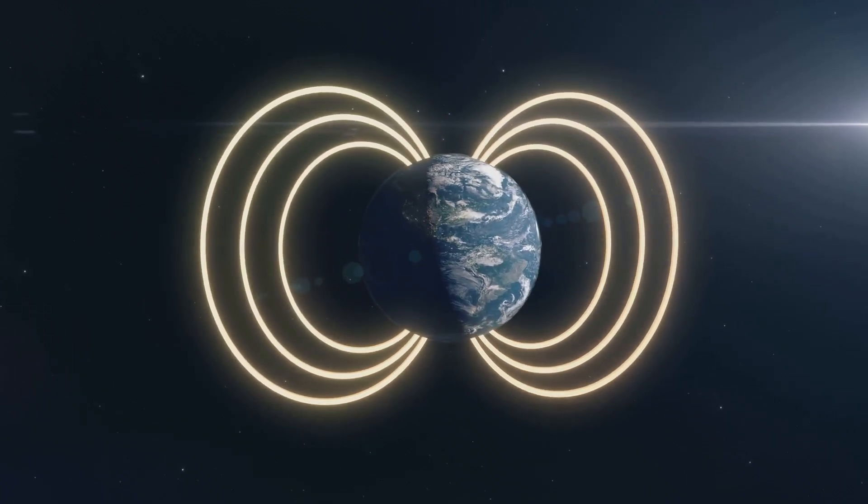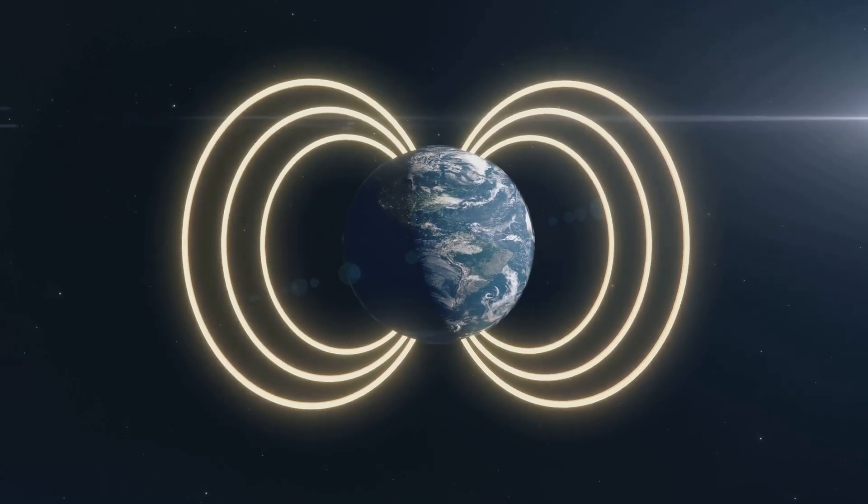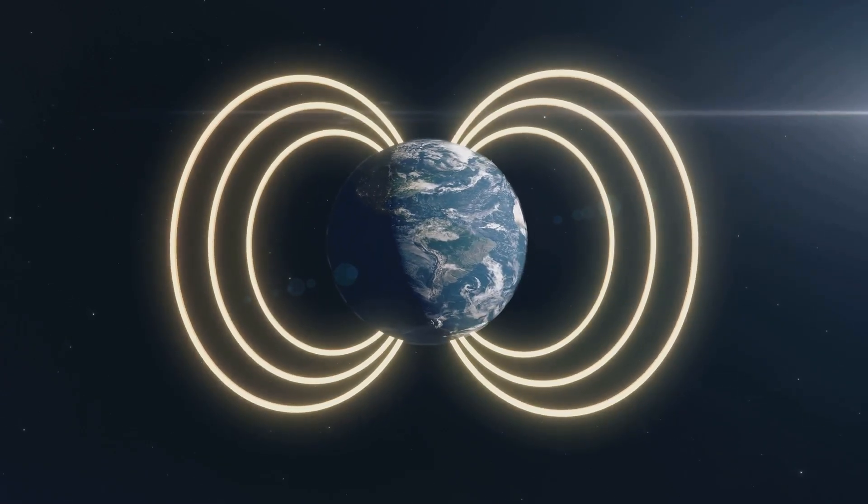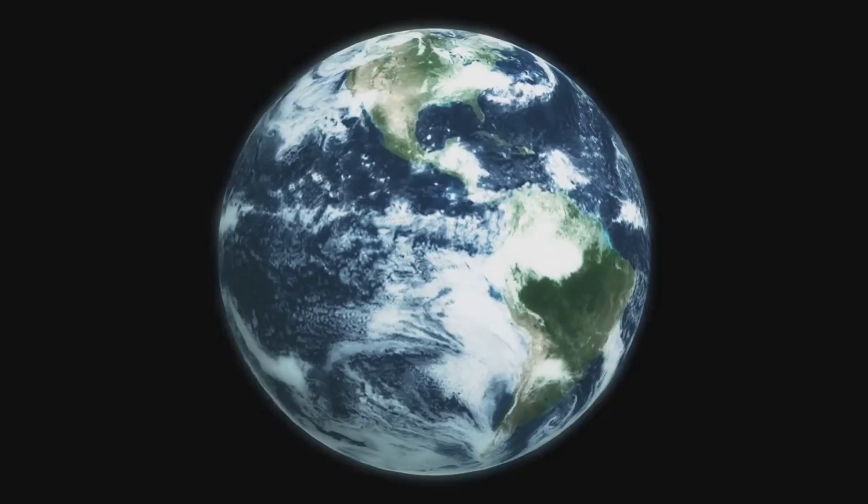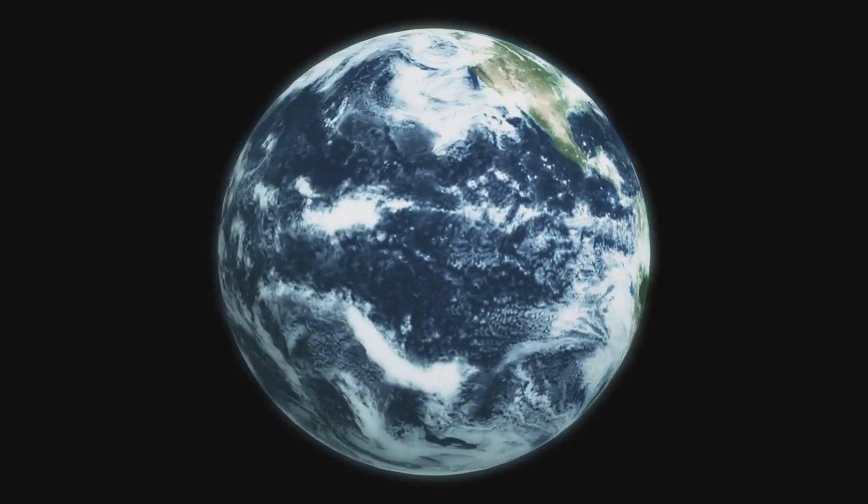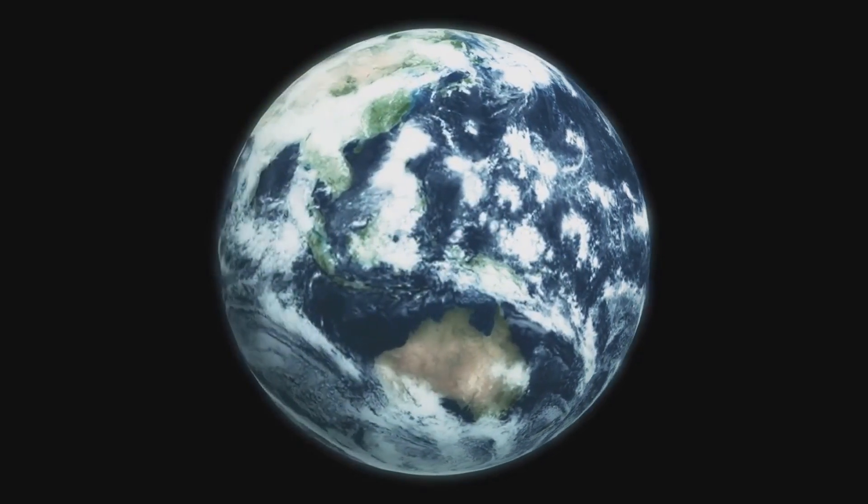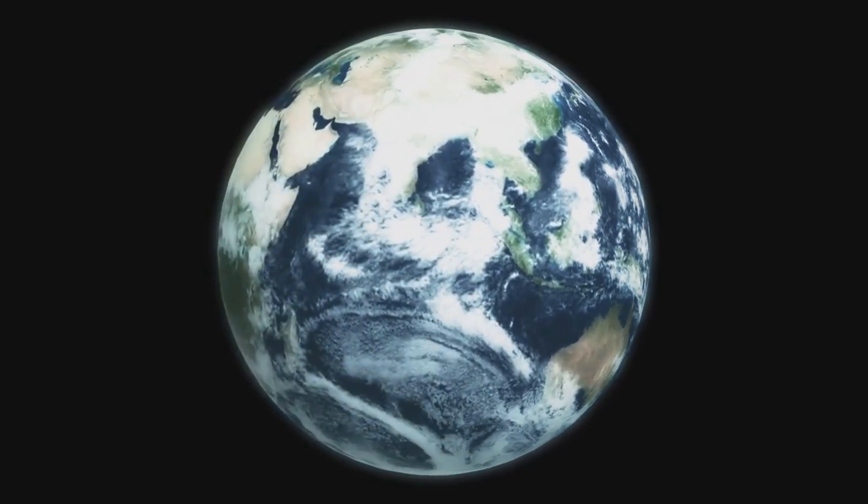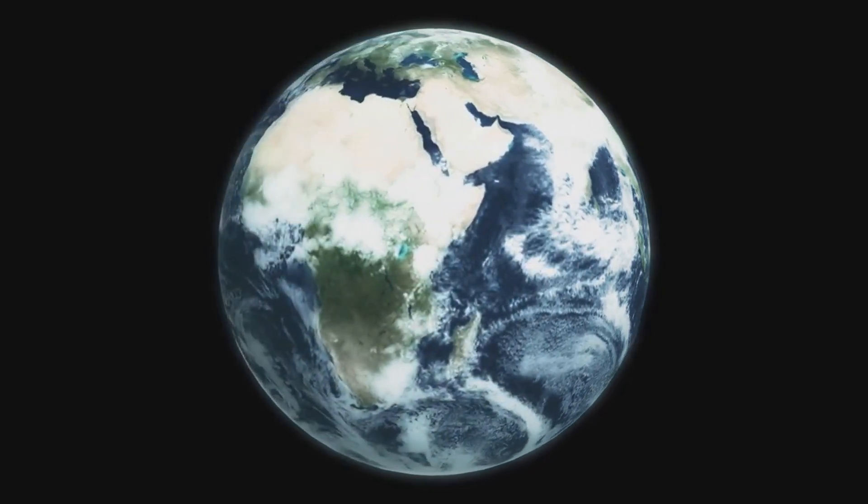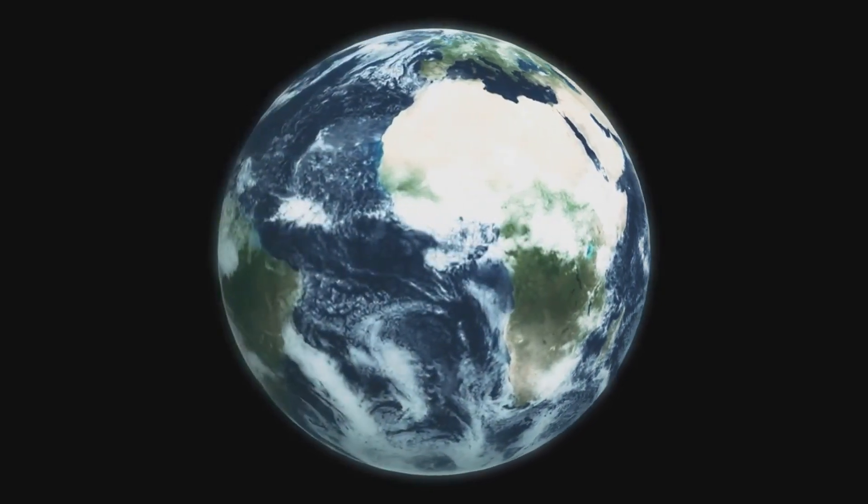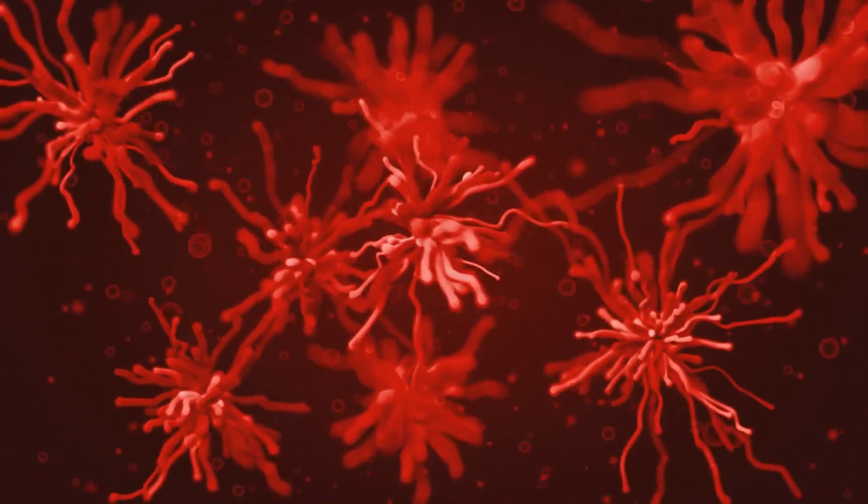And then there's Earth, our home. A cosmic anomaly. Positioned perfectly in the habitable zone of our sun, blessed with a protective atmosphere and a magnetic field to shield us from solar winds. It's here that water, that elixir of life, exists in abundance. It's here that conditions over billions of years have allowed life to spark, to evolve, to thrive.